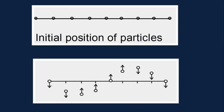Let us understand with the help of these diagrams. In the first diagram, all the particles are at their initial positions. When a disturbance is created, they start oscillating about their mean positions. In the second diagram, we see that certain molecules are moving away from the mean position while some molecules are moving towards the mean position. They are displaced from their mean position, and at the same time different molecules are at different displacement positions, and hence a wave form is created.